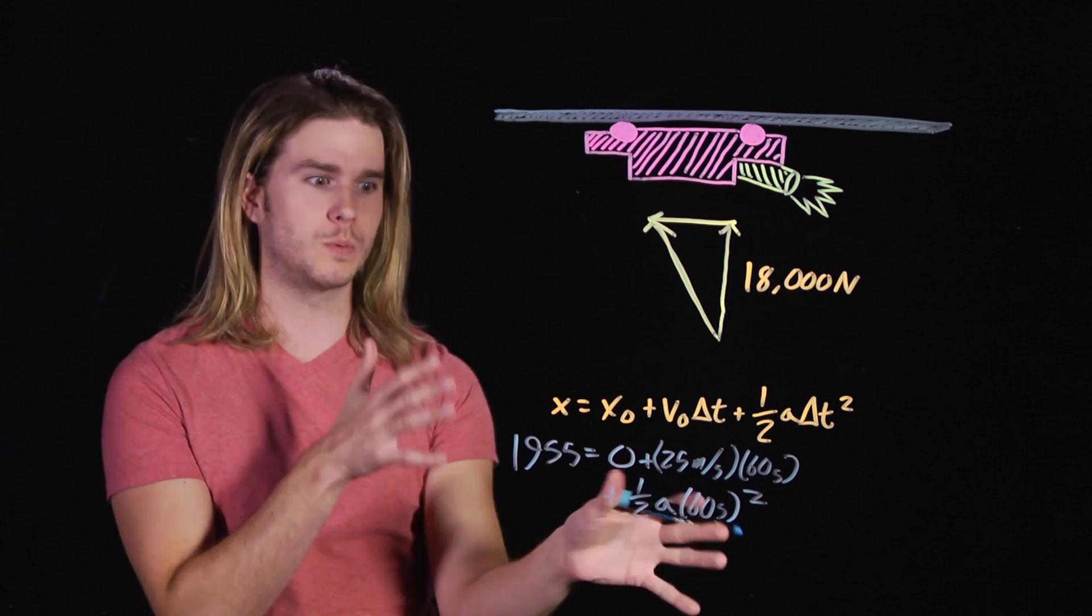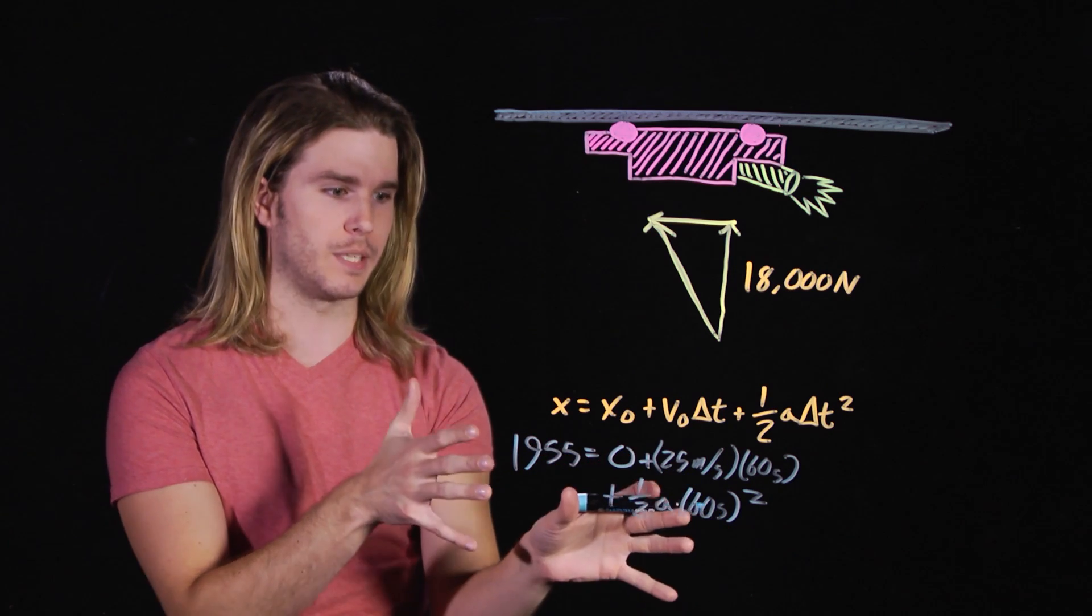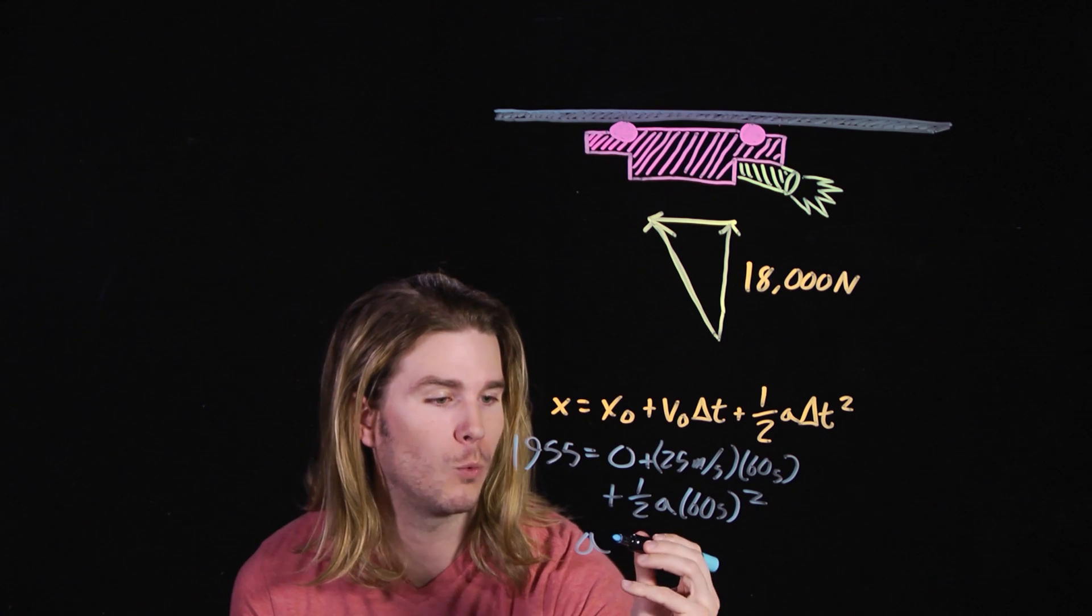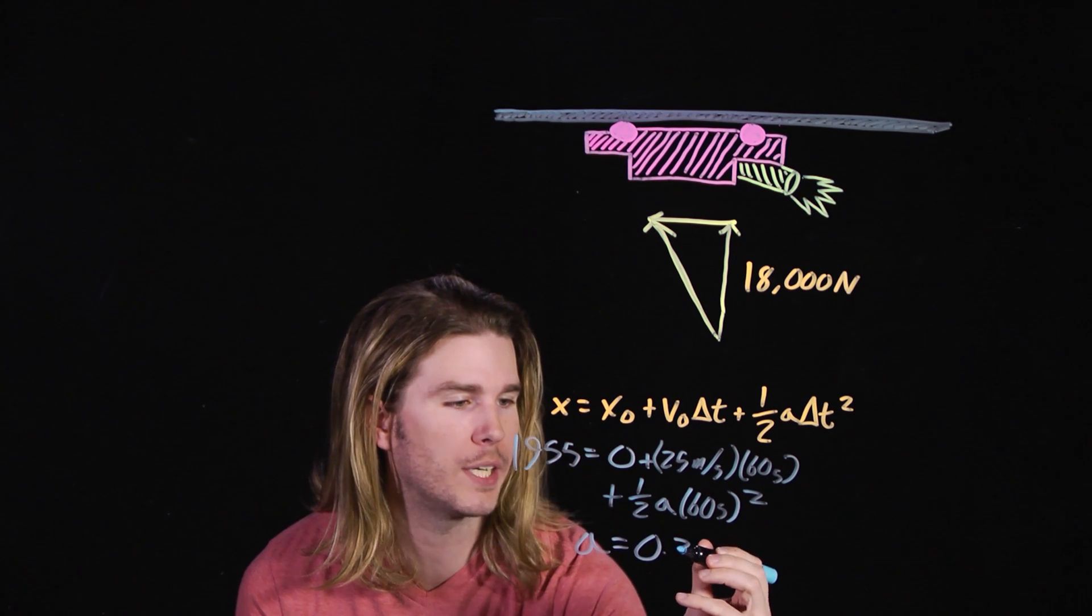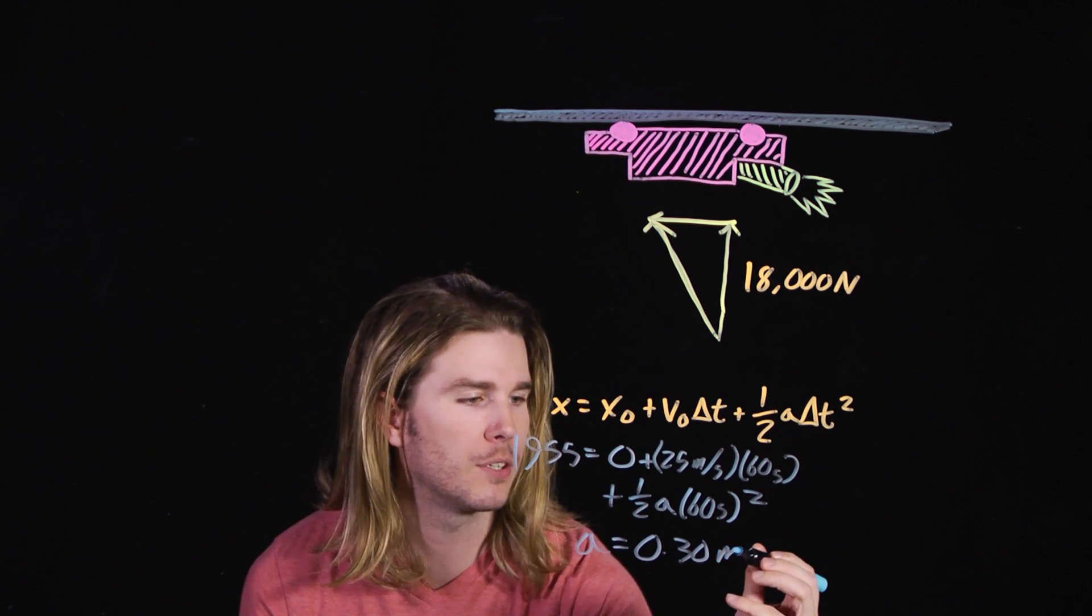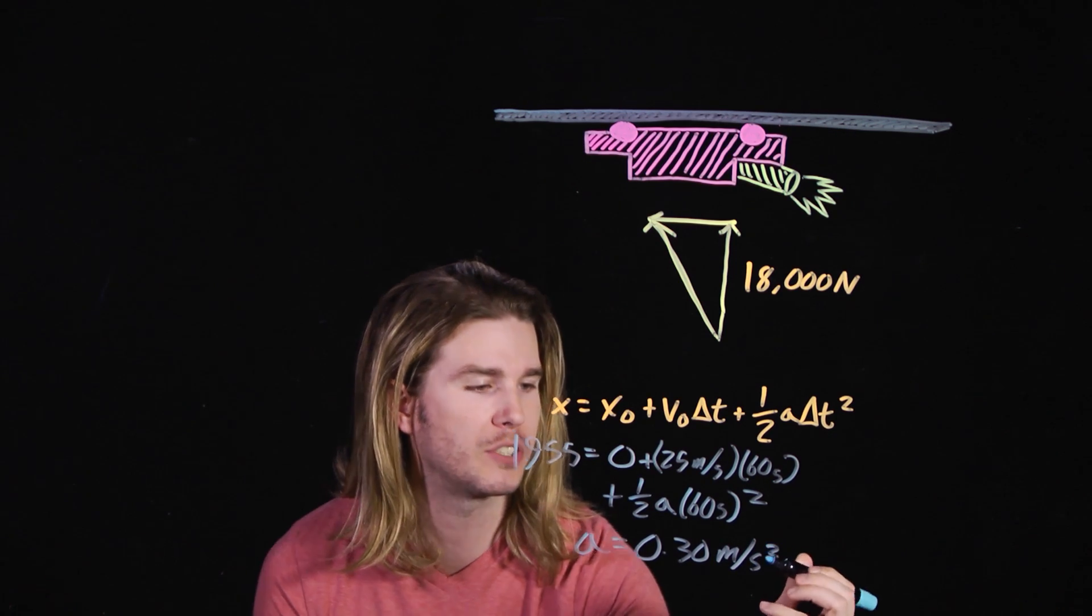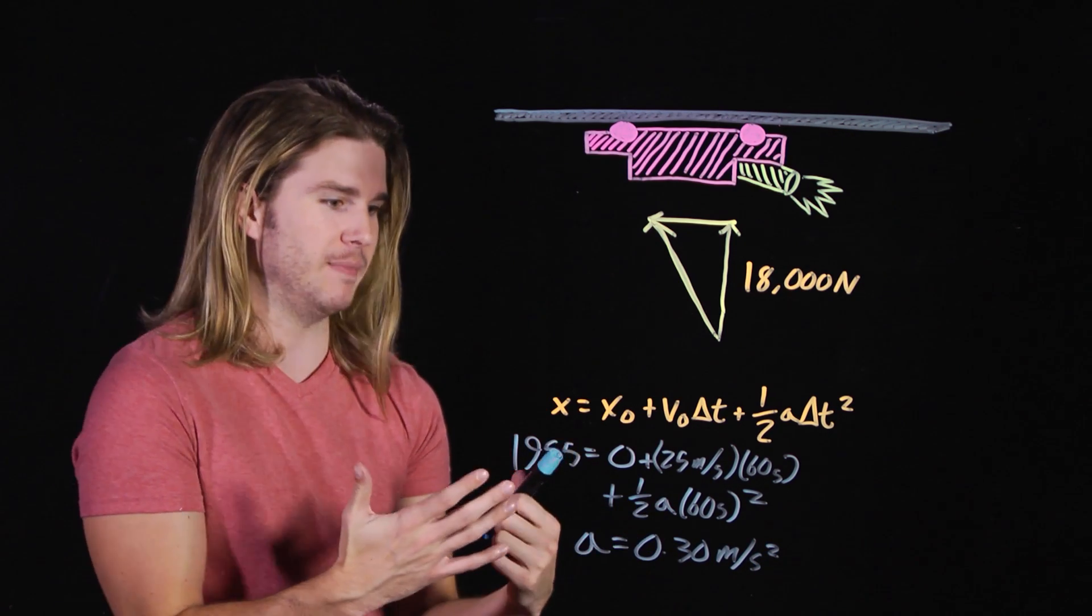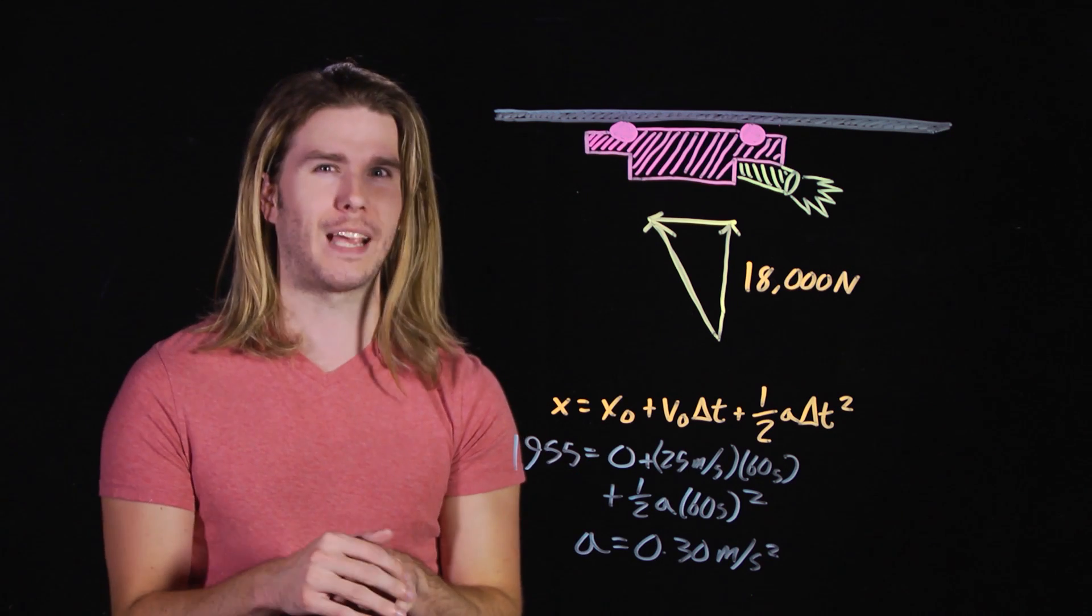Now solving for A, I won't spare you the math because we have to do it, it's science. Solving for A, we get around 0.3 meters per second per second, which is about a third of a G, which is good because if it's too high, you pass out.